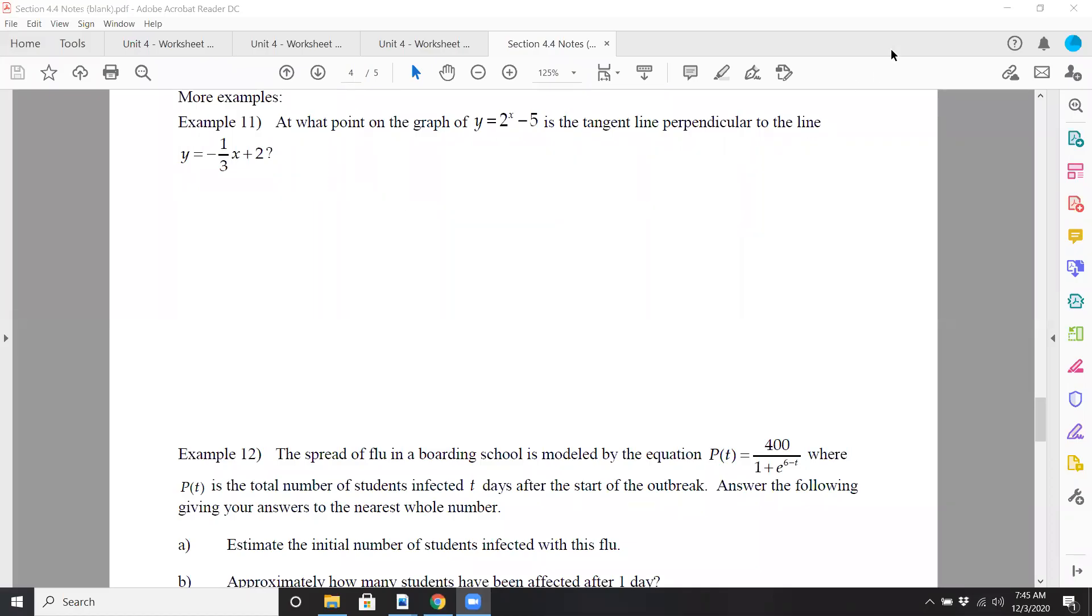Welcome to a video discussing pages 4 and 5 of the section 4.4 notes. Here we're going to start with example 11. You're asked to find at what point on the graph of y equals 2 to the x minus 5 is a tangent line perpendicular to the line y equals negative 1/3 x plus 2.